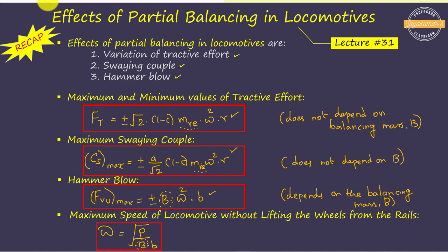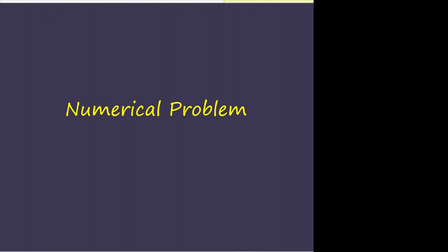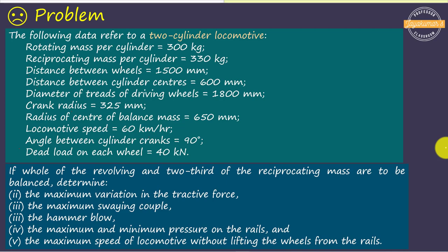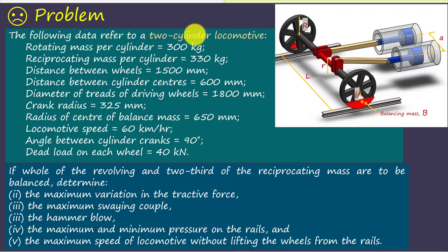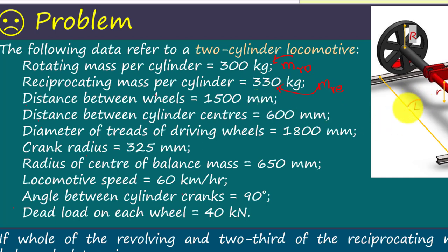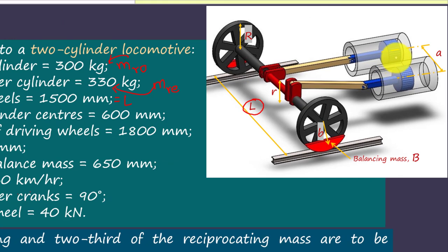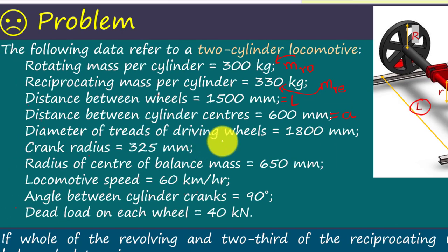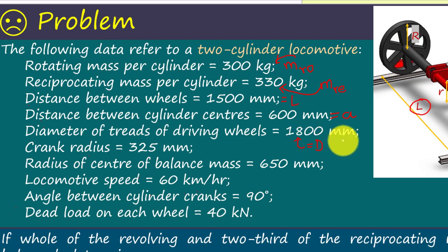These formulae we are going to use to solve the numerical problem. Now, let us solve the problem. This is the problem statement: the following data refers to a two-cylinder locomotive. The rotating mass per cylinder is 300 kg. Mass of the reciprocating parts, M suffix RE, is 330 kg. Distance between the wheels — they have given us the value of L. Distance between the cylinder centers is 600 mm — they have given the value of A. Diameter of the driving wheels is given as capital D, from which we can find the value of R.